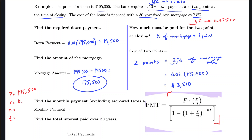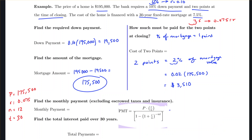There are 12 payments per year because it's a monthly payment, and it is a 30-year loan. Substituting all values into the formula, the top of the expression is $175,500 times the fraction (0.075 divided by 12), keeping the numerator together in parentheses. The goal of writing these parentheses is to make sure the calculator keeps everything together.